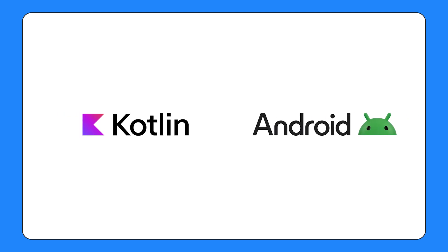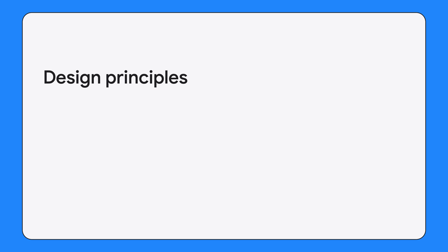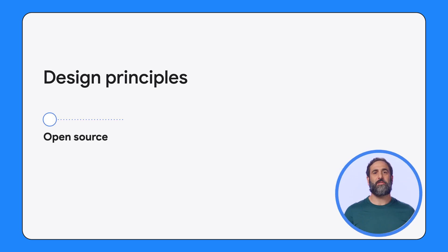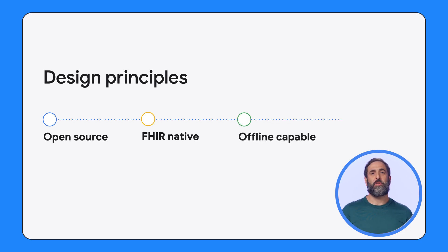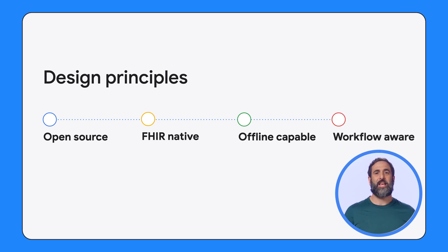Let's dive in. The Android FHIR SDK is a set of Kotlin libraries for working with FHIR on Android, underpinned by a set of principles. Firstly, it's open source and we have an active community of developers using and contributing to the project. It's FHIR native, which means that as a developer you can use FHIR throughout your application — for example, as the data model, to define content, and to easily sync with a FHIR back-end. It's offline first, meaning you can build feature-rich applications that work in low or no-connectivity environments. And it provides advanced capabilities for building apps that can guide delivery of evidence-based care pathways and calculation of indicators, all on-device.